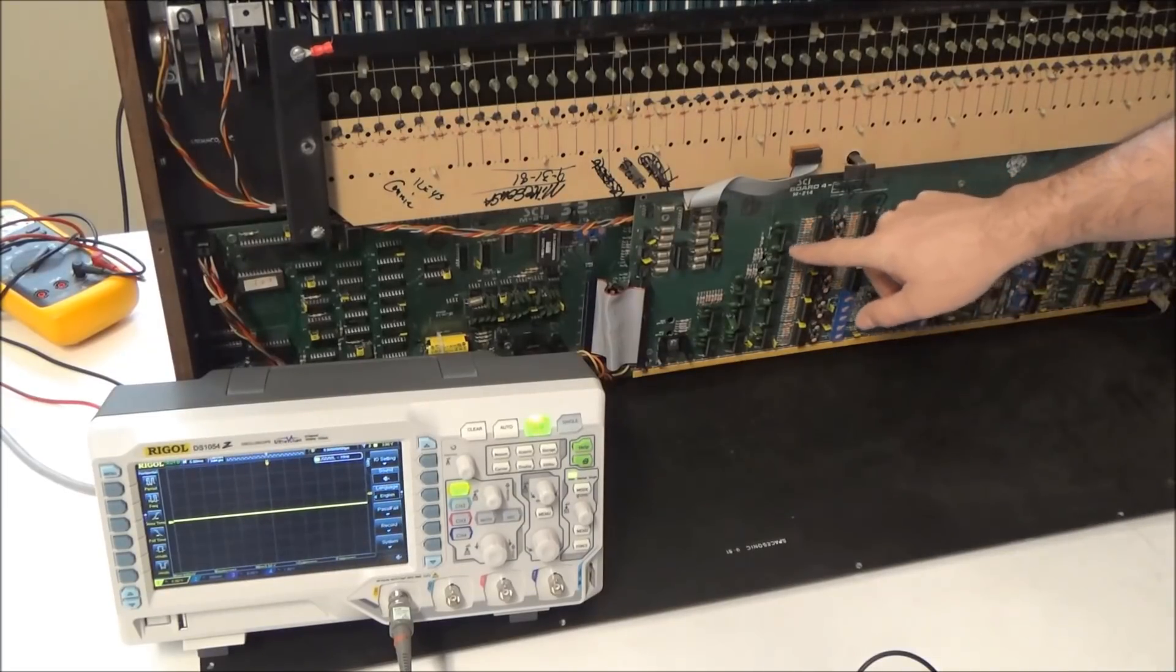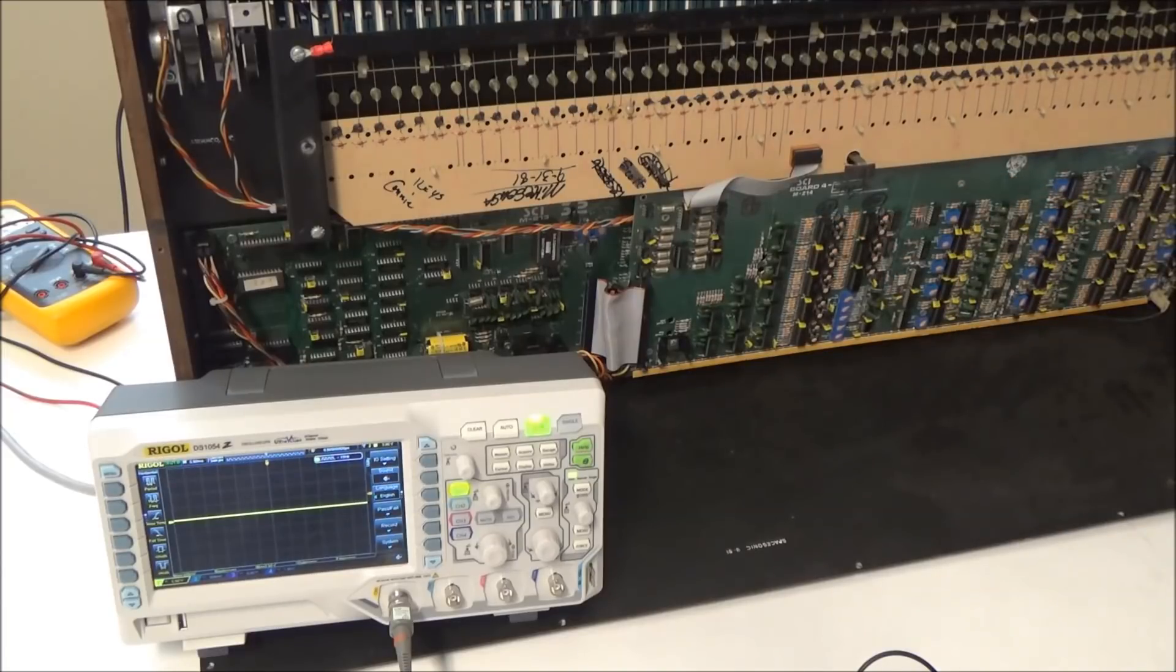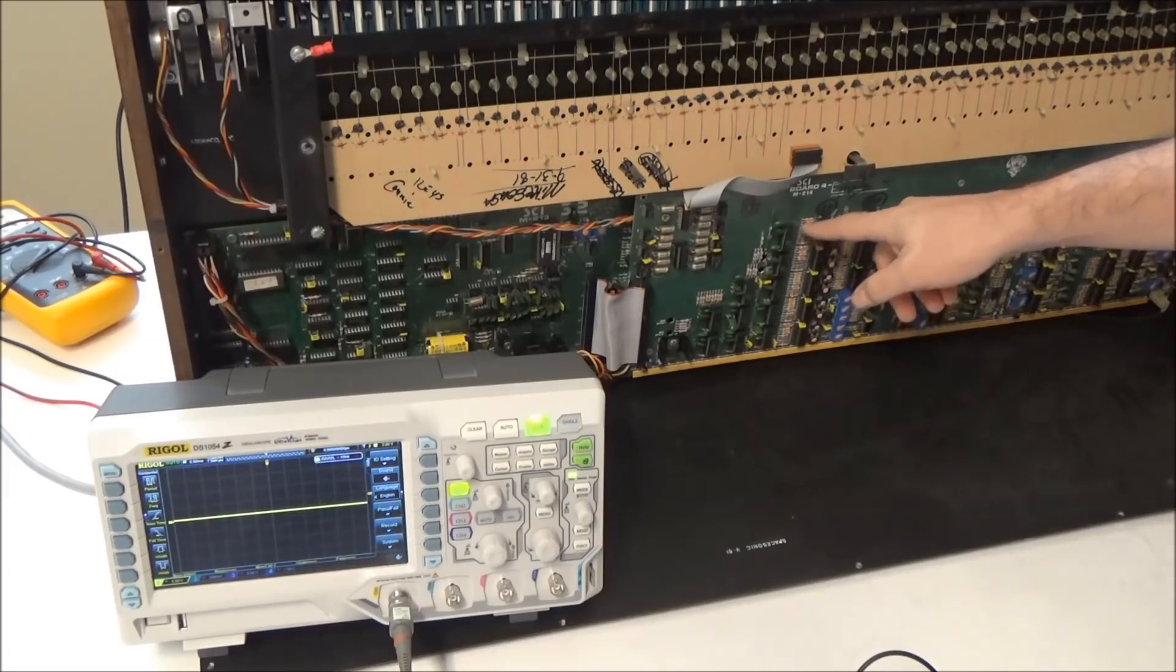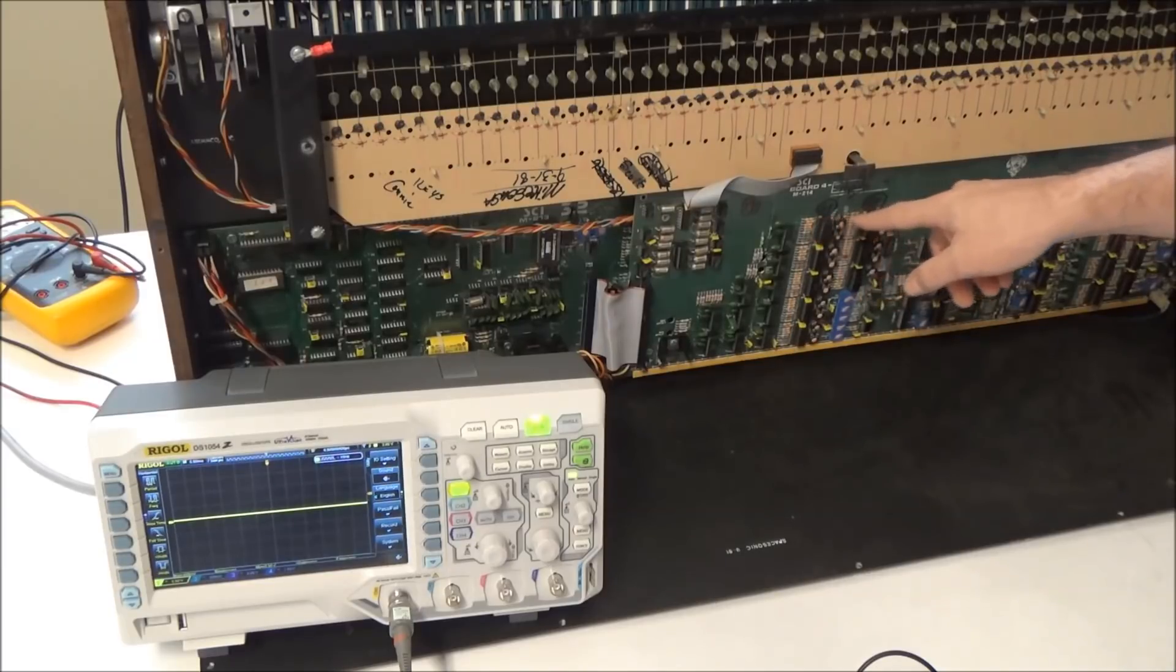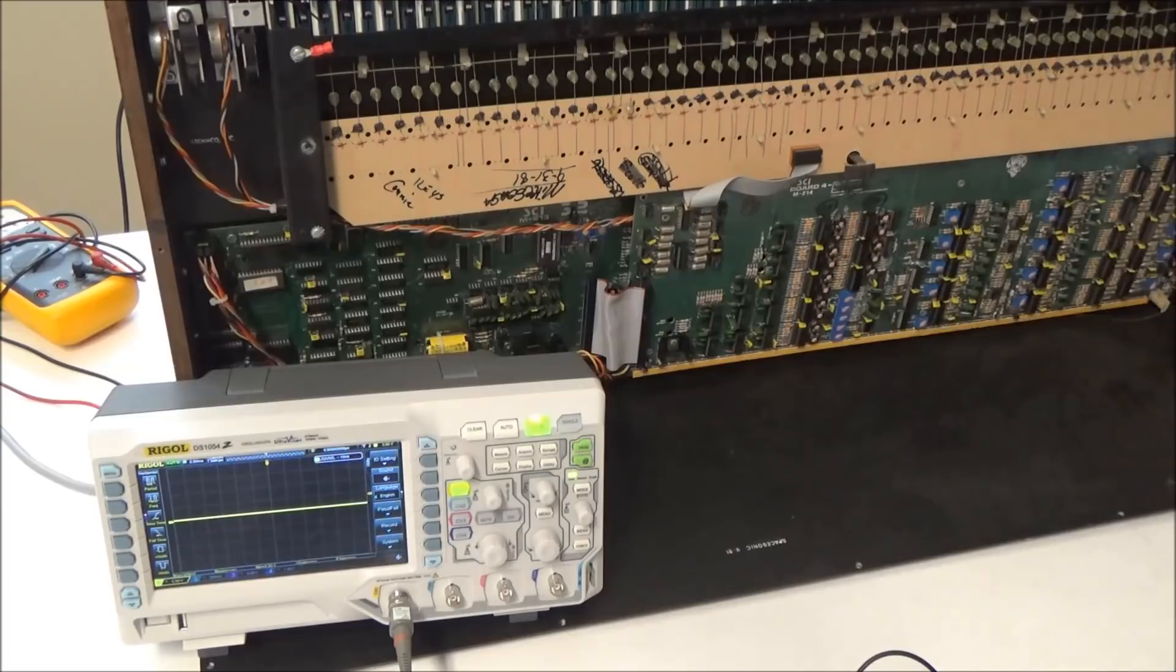So I played with it some more, and it does seem like our problem is with voice number 1. So another thing that's different from the Oberheims is the Prophet 5 doesn't gate the voices round robin. So if a note is already assigned to a particular voice, and you gate that note again, it's going to use the same voice that gated it last time. Like on an Oberheim, if you pressed C and then D and then C again, you'd use voice 1, 2, and 3. But on the Prophet 5, you would use voice 1, 2, and then 1 again. And that's what threw me off the trail of this problem at first, because I was assuming that if it was a problem with a specific voice, that I'd hear it every 5th key I press, but that's not the case with the Prophet 5.